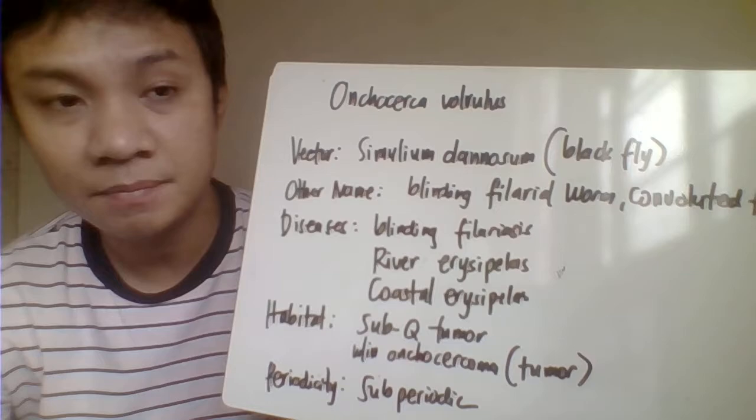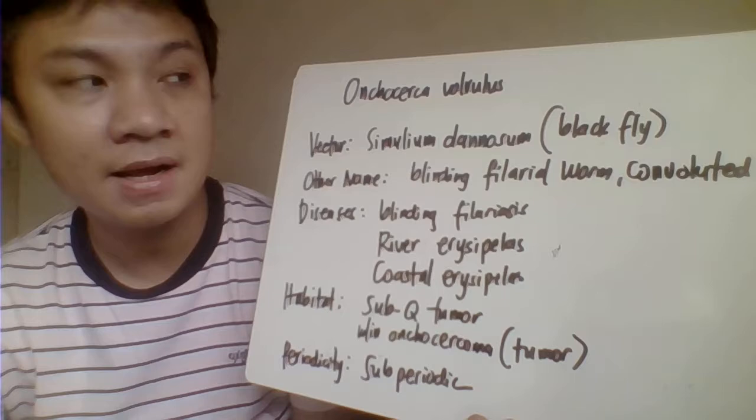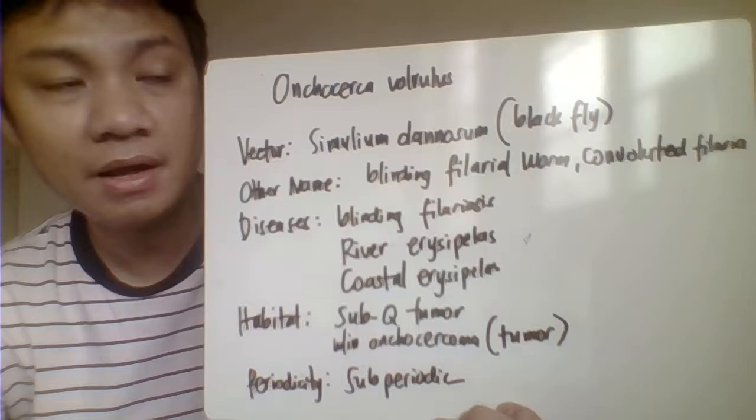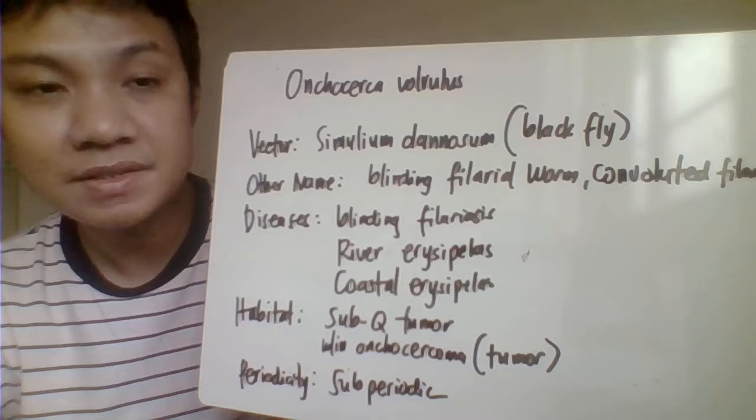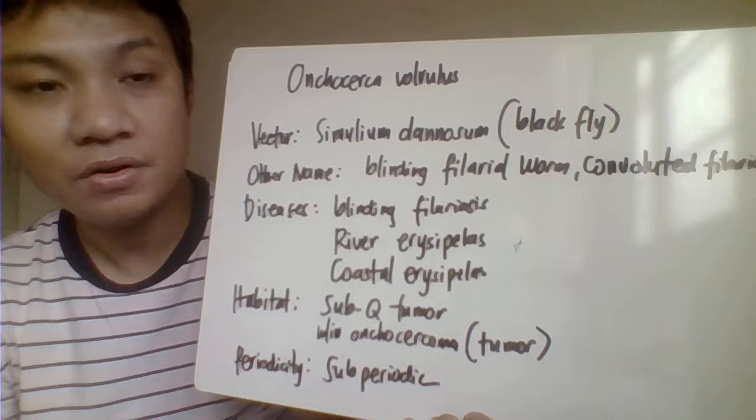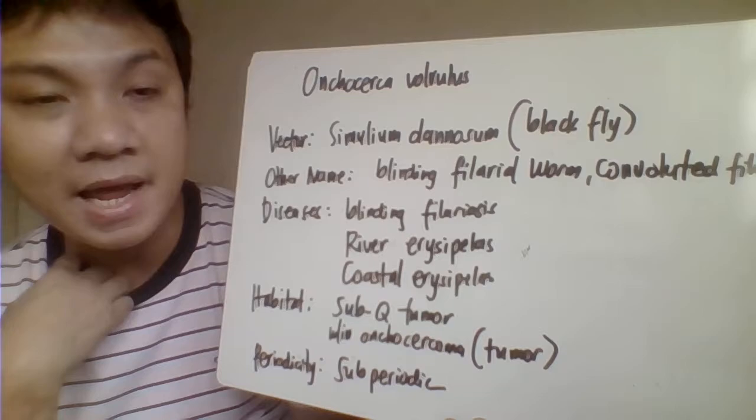When we say river or coastal, we are referring to bodies of water. Basically, it is transmitted by the black fly belonging to the genus Simulium — specifically Simulium damnosum. It is called river erysipelas or coastal erysipelas because the life cycle of the vector requires a river or stream in order to complete its life cycle.